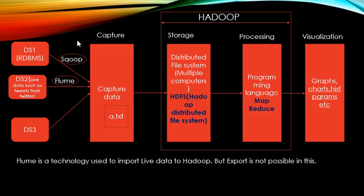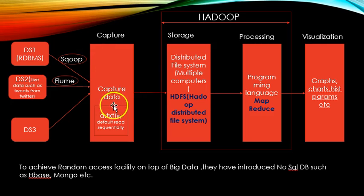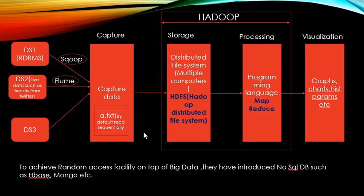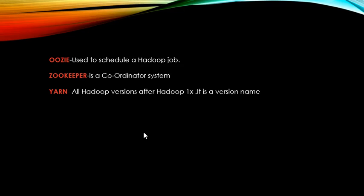Flume is a technology used to import live data to Hadoop, but export is not possible — it can only be used to import live streaming data. By default, data such as a .txt file is read sequentially. If you want to achieve random access on top of this big data — to read a text file in any manner — you need to introduce a NoSQL database such as HBase or MongoDB.